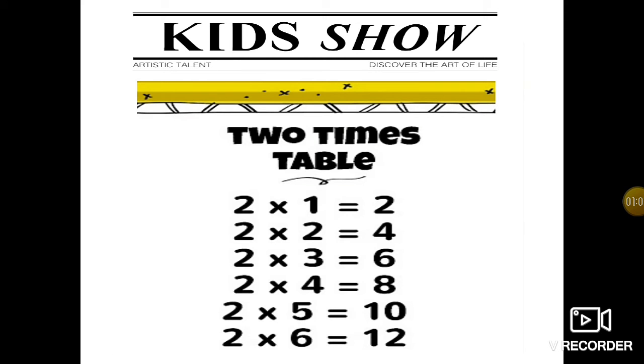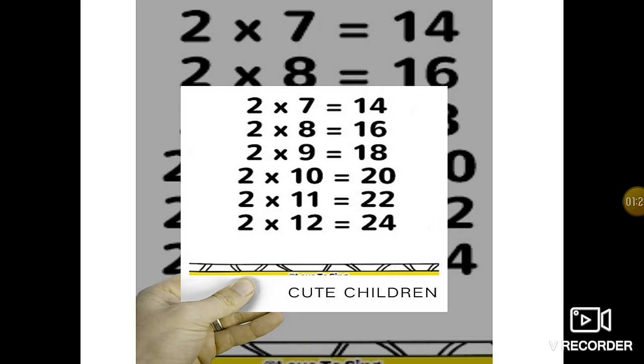Now, once again we have to repeat. 2 times table. 2 1s are 2, 2 2s are 4, 2 3s are 6, 2 4s are 8, 2 5s are 10, 2 6s are 12, 2 7s are 14, 2 8s are 16, 2 9s are 18, 2 10s are 20, 2 11s are 22, 2 12s are 24.